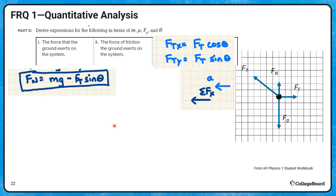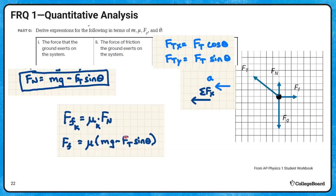Test-taking strategy: you really can't get part two correct without getting part one correct. However, if you got part one wrong but identified the relationship between friction and normal force and substituted your part one answer, you'd still get partial credit for part two. Don't stop a problem at the beginning — keep going, come up with the best answer you can, and make as many true statements as possible to earn partial credit on subsequent parts.